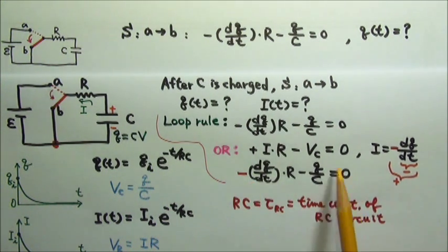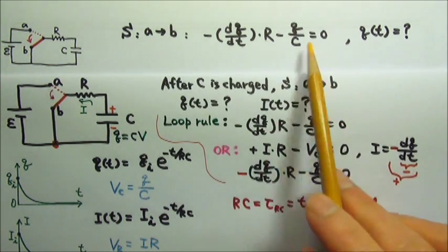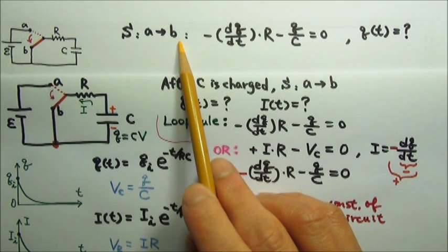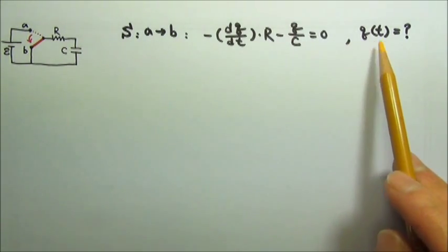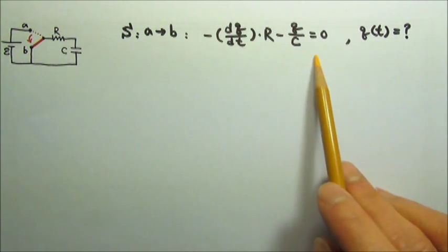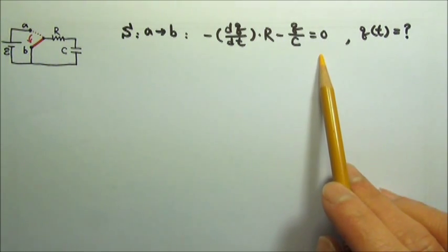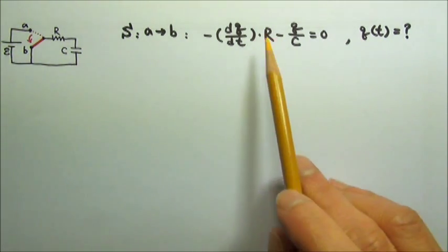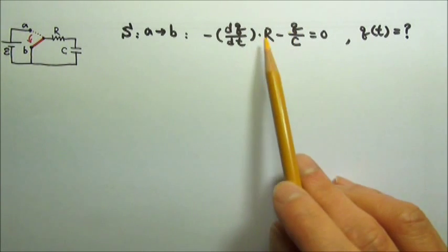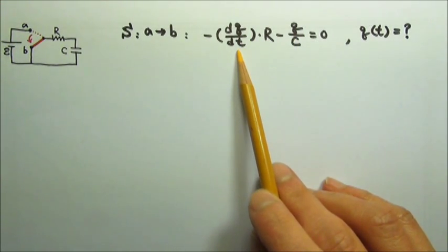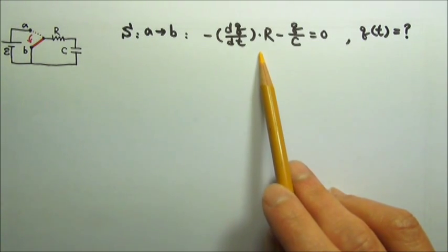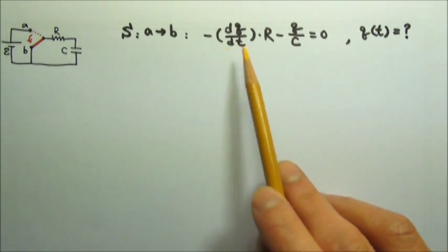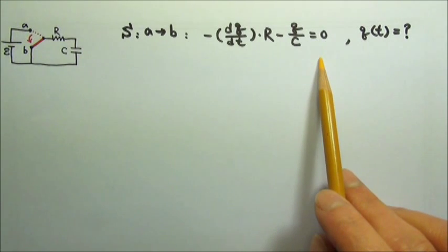Now let's solve the differential equation when the capacitor is being discharged. We're looking for q as a function of time, and this is like having an algebraic equation involving q and t. To solve for q as a function of time, we have to separate the variables, moving q to one side and t to the other side.